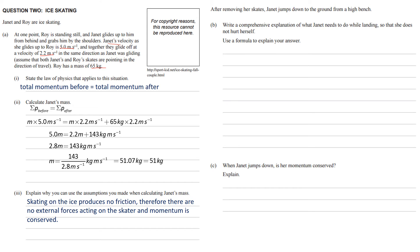Okay, so question B. Comprehensive explanation of what Janet needs to do while landing. She jumps off a bench so she does not hurt herself. Use a formula to explain your answer. Okay, so this one here, obviously the formula we're going to use is this one here: delta P equals F delta T.